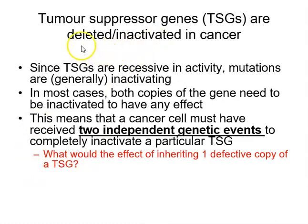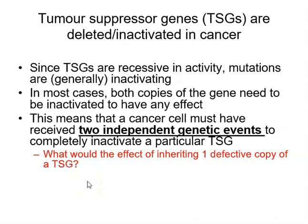Tumour suppressor genes are inactivated in cancer, often by gene deletion, nonsense mutations, and some missense mutations — they are recessive in activity with generally inactivating mutations. For a cancer cell to lose tumour suppressor gene function, two independent genetic events must affect both copies of that gene. In hereditary cancers, one defective copy is inherited, meaning that copy is inactive in every cell in the body.